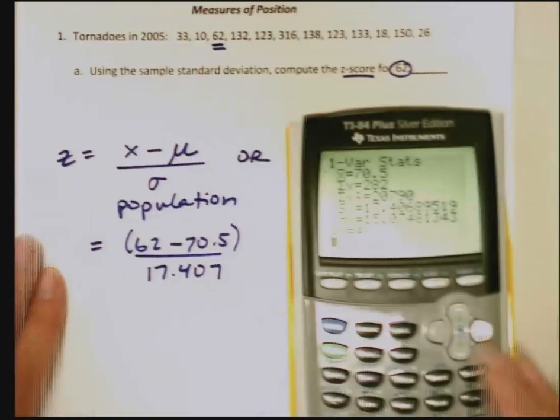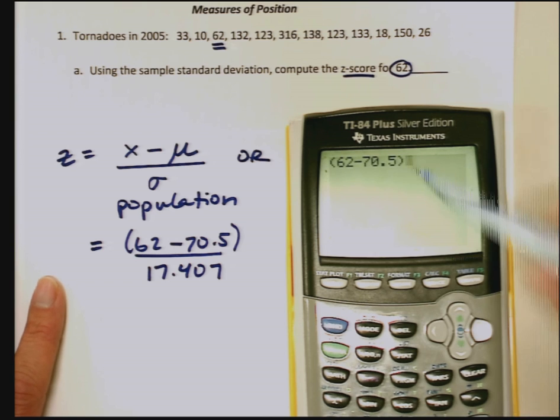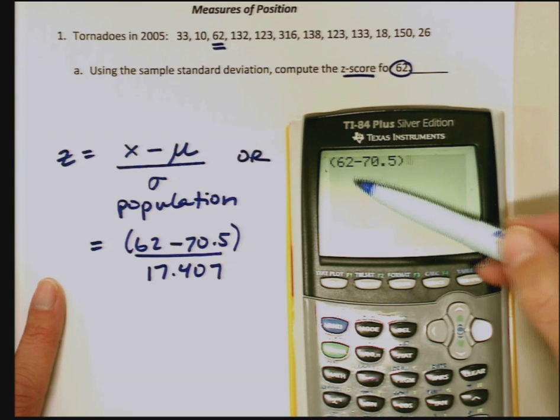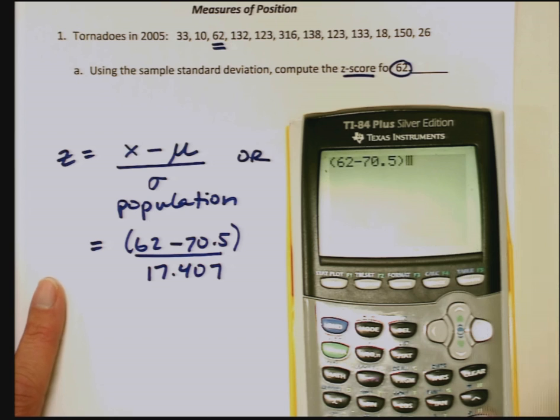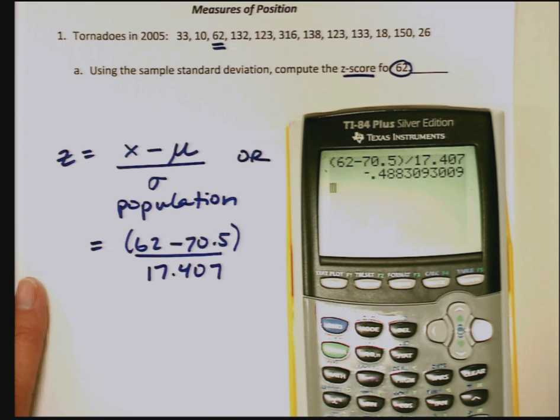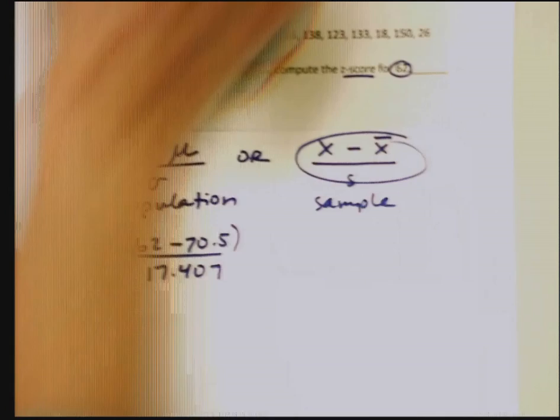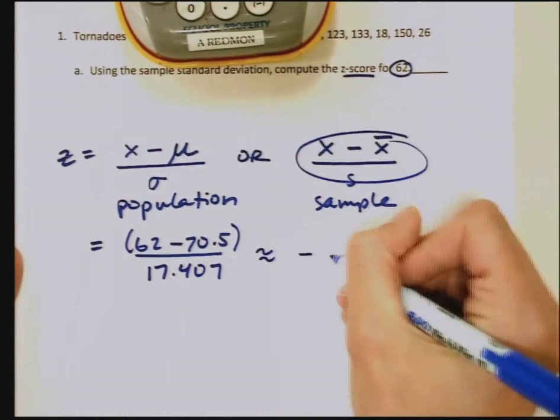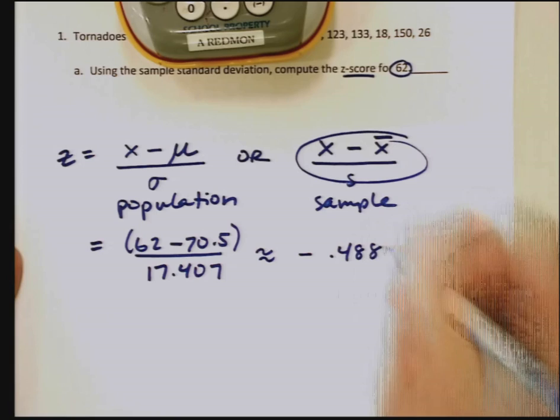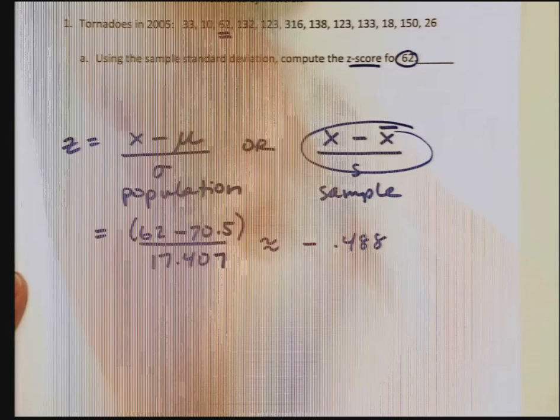If you want to do this all at once, you can put parentheses there. So let's compute that. I want 62 minus 70.5. This is the deviation right here. That tells me how far 62 is from the mean. And I want to divide that by the standard deviation. I get negative 0.488. So this is about negative 0.488. Make sure you're reading the instructions carefully so that you know how many decimal places you want.